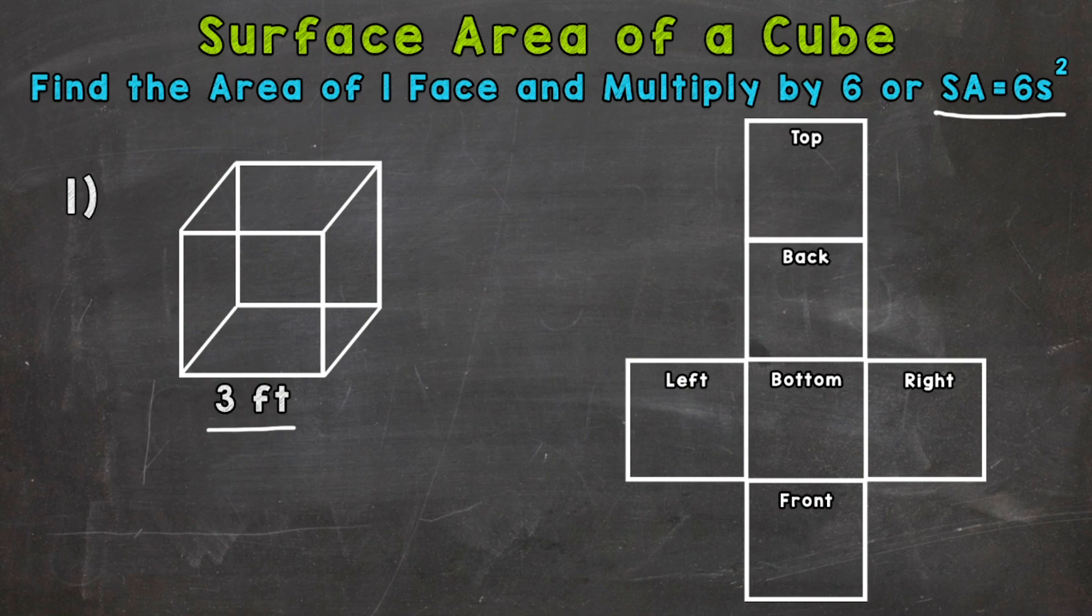So we need to find the area of one face. We can use area equals length times width for a square. So for a cube, we have that three feet times, well, every side length is the same for a cube. It's made up of square faces, so every side length is going to be three feet. So we can do three times three to find the area of one face, and three times three is nine. So the area of, let's say we did the front face there, the area of that front face is nine square feet.